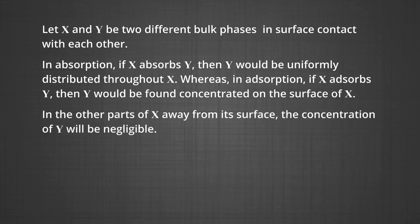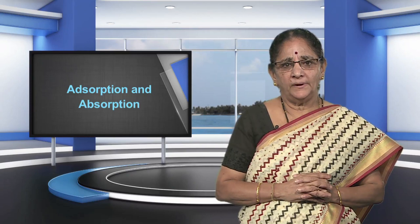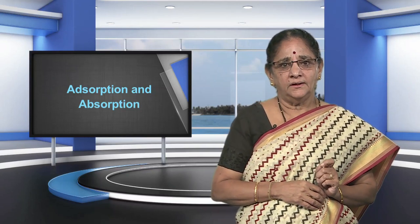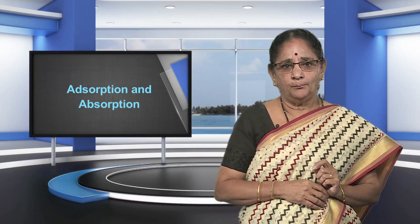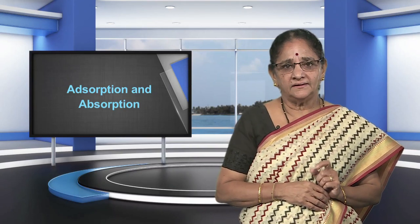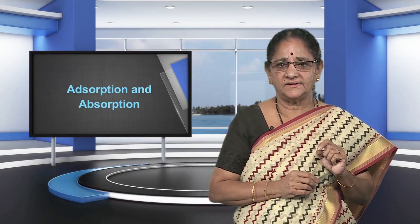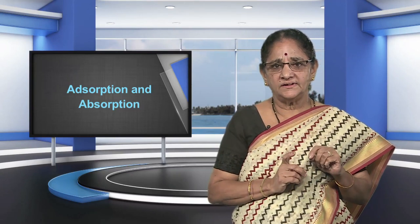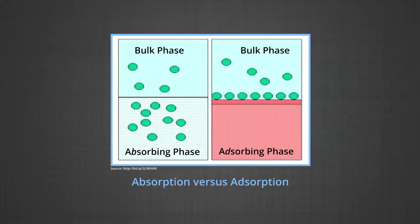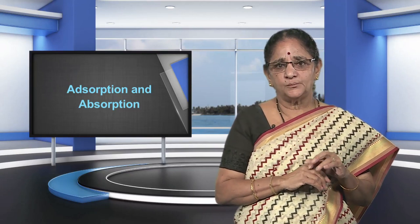In the other parts of X, away from its surface, the concentration of Y will be negligible. A distinction can be made between absorption and adsorption by the example of water vapor: water vapors are absorbed by anhydrous calcium chloride but adsorbed by silica gel. In adsorption, the concentration of adsorbate increases only at the surface of the adsorbent, while in absorption, the concentration is uniform throughout the bulk. Both adsorption and absorption can take place simultaneously; the term sorption is used to describe both processes.